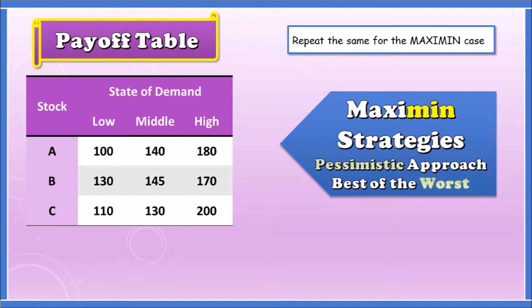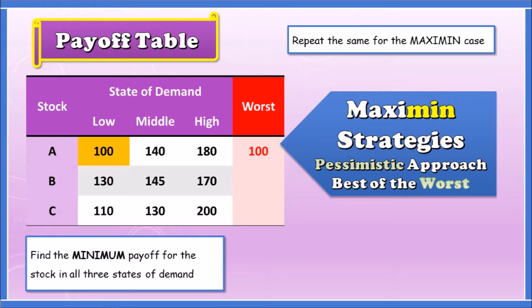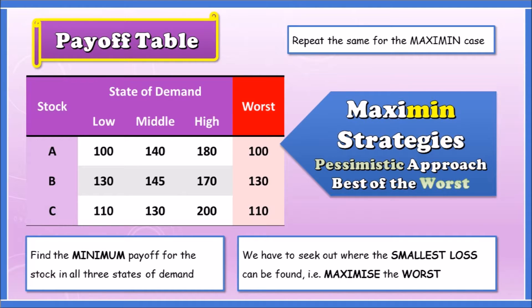Now let's try the maxi-min strategy — the pessimistic approach, the best of the worst. Using the same information, instead of finding the best value we're going to find the worst value. The worst value for Stock A is 100, the smallest. For Stock B the smallest value is 130. For Stock C it's 110. Because it says maxi-min, not mini-min, we want to maximize the worst value — the best of the worst.